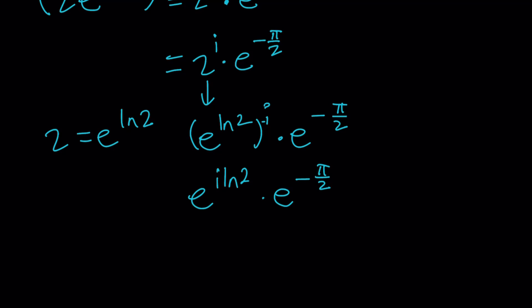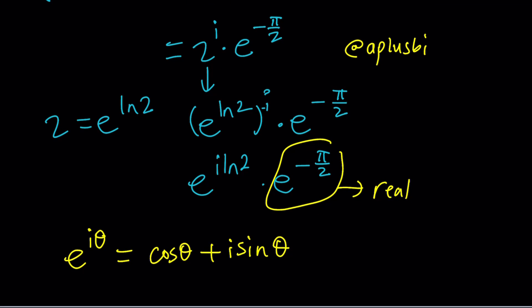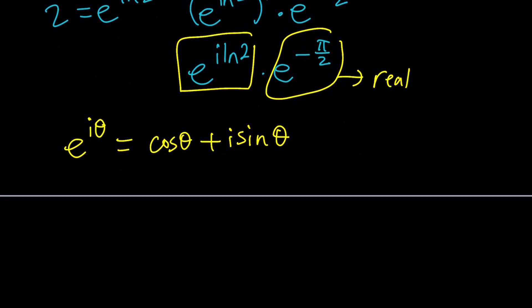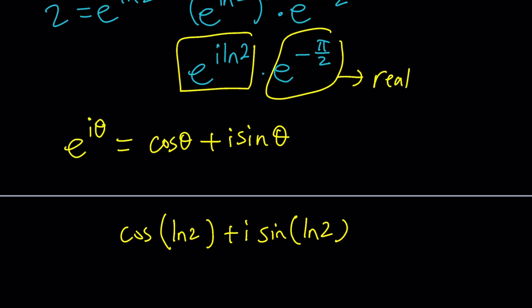Now, e to the power negative pi over 2 is a real number, so that part is real, and the other part is complex. For the complex part, we use Euler's formula, which tells us e to the power i·theta equals cosine theta plus i·sine theta. There are some lecture videos on the channel 'a plus bi' if you're new to complex numbers. Looking at Euler's formula and what we have, e to the power i·ln 2 equals cosine of ln 2, plus i times sine of ln 2.